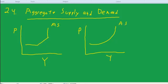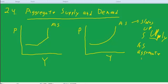And you can remember it maybe that supply slopes up. So AS stands for aggregate supply.